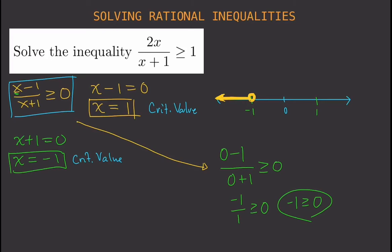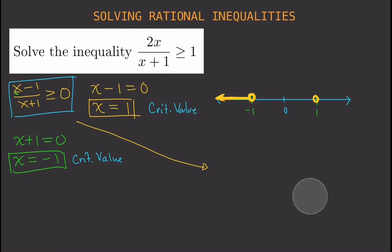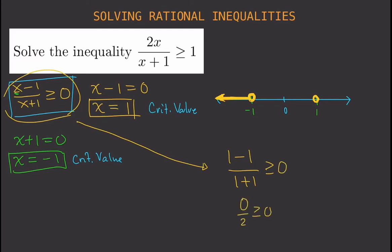Now let's check if the critical value x equals 1 is a solution. Substituting 1 gives 1 minus 1 over 1 plus 1, which is 0 over 2, which gives 0 greater than or equal to 0. That is a correct statement — 0 equals 0 — so x equals 1 is part of the solution. We cover the hollow circle to make it a filled circle.